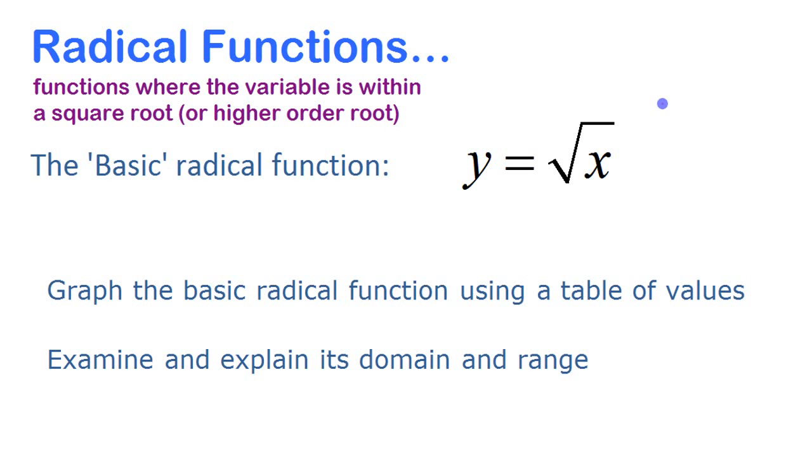Maybe before we start looking at the graph of this basic radical function, let's just look at this symbol here that you've seen before, but maybe never thought about. That symbol there, that radical symbol, that square root symbol, was introduced by a guy named Christoph Rudolf almost 500 years ago, in the early 1500s. It's thought that it is because it's meant to look like a lowercase r, sort of an elaborate r. I don't know if there's any direct proof of that, but that's the common thinking.